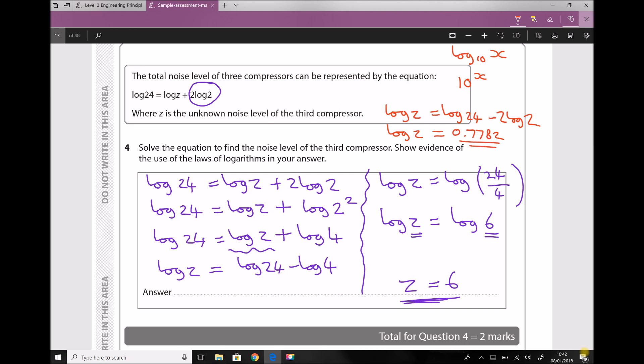Therefore z is just 10 to the power of 0.7782. Well, 10 to the power of 0.7782 gives us the value of 6 that we achieved using log laws.